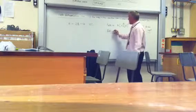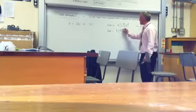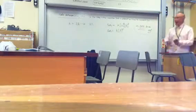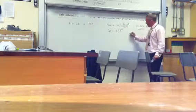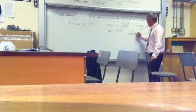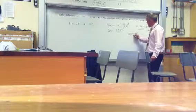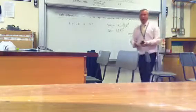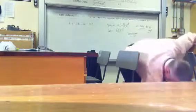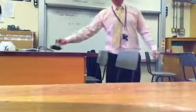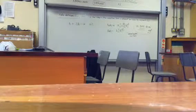Let's suppose we find it's order zero with respect to A and order two with respect to B. We don't usually include a term if it's order zero, so we would write the rate equation as rate = k[B]². The order of reaction for a particular substance is the power to which the concentration term is raised in the rate equation.